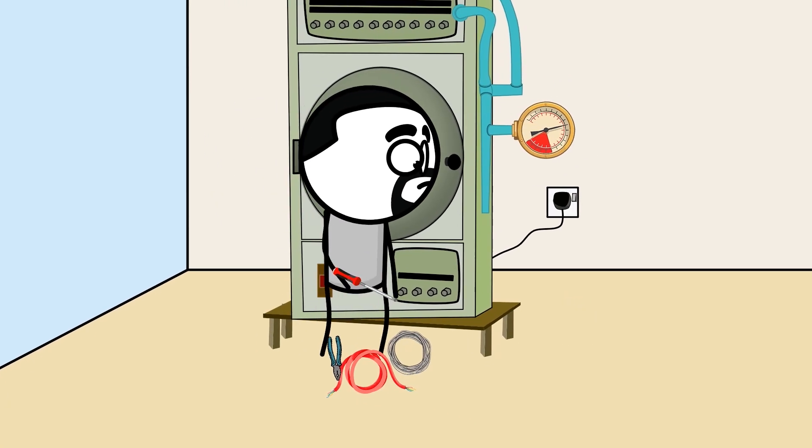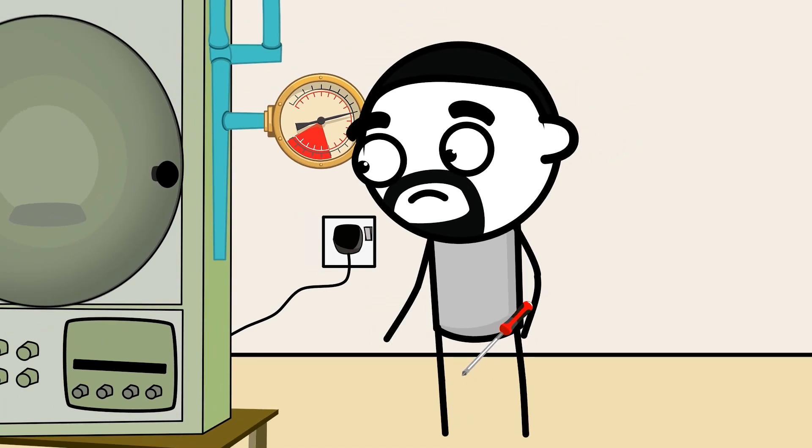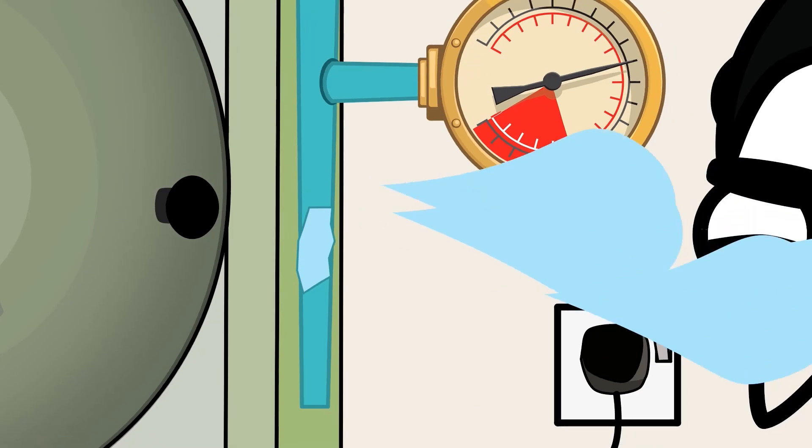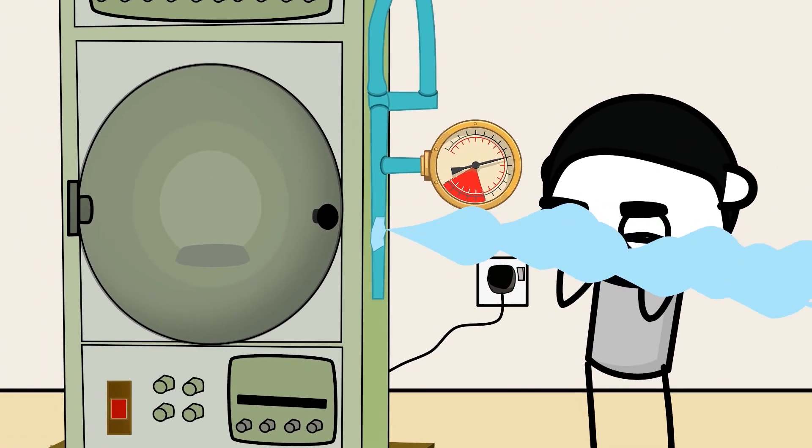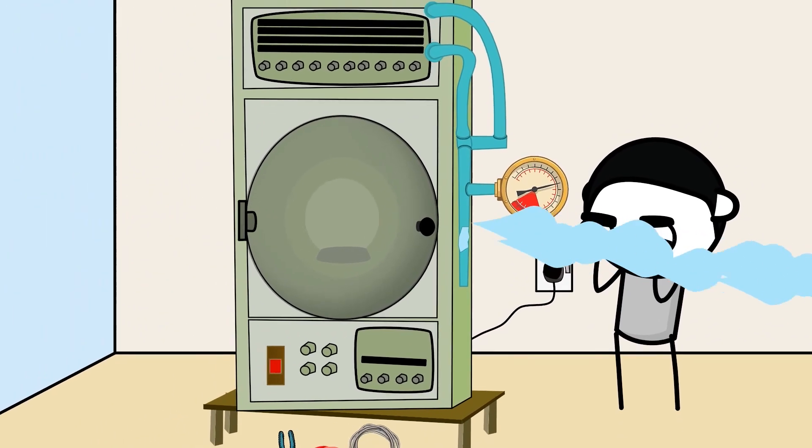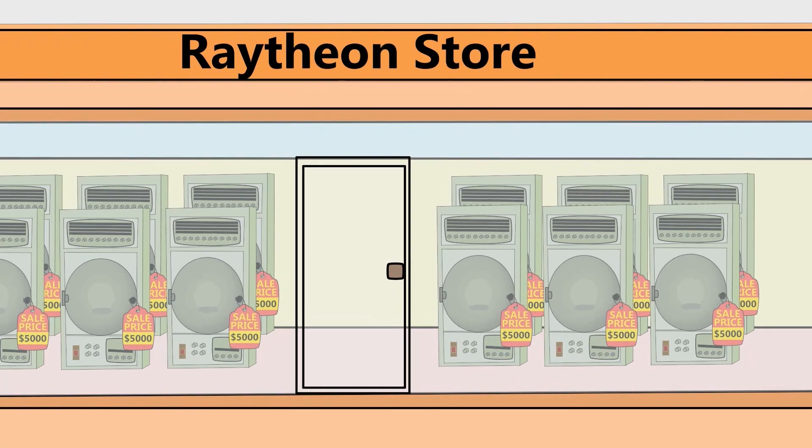You can just imagine the scene. A proud engineer flips the on-switch for the first time, only for a pipe to burst, blasting the unfortunate plumber in the face with a jet of water. It wasn't just an oven. It was a potential indoor water feature. It was, to put it mildly, a commercial disaster.